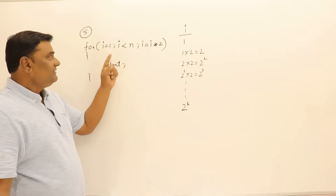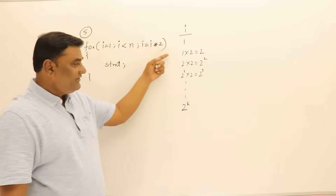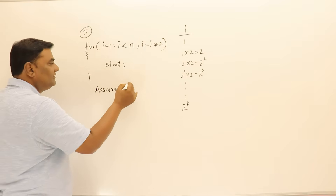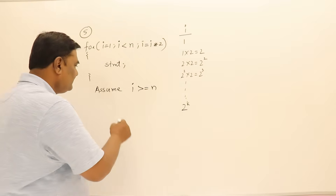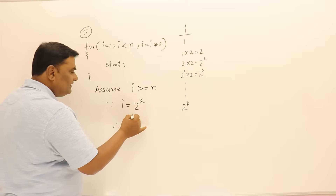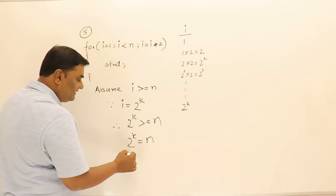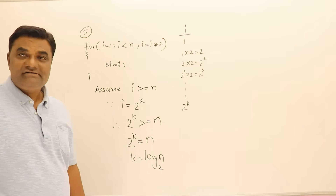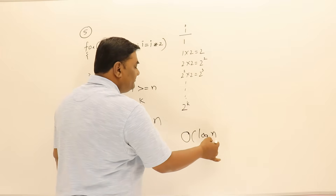We know the loop will terminate when i becomes greater than or equal to n. So assume after k repetitions, i equals 2 power k, and 2 power k has become greater than or equal to n. If we equate 2 power k equals n, then k equals log n base 2. So the statement will execute for order of log n base 2 times.